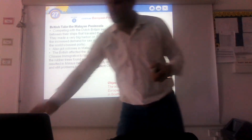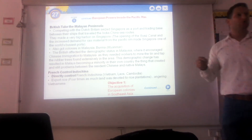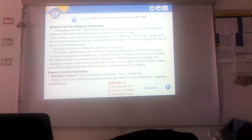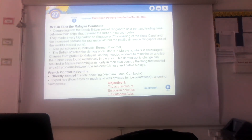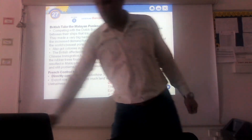The third example is France and the area called French Indochina — named 'Indochina' because it sits between India and China, the two major trading destinations. This area represents today's Vietnam, Laos, and Cambodia. The French focused on rice exports, devoting four times as much land to rice plantations, which angered the Vietnamese because it left little for their own food crops.